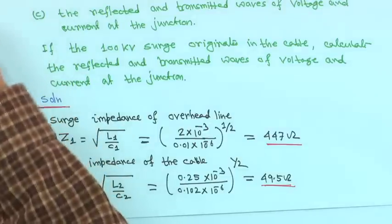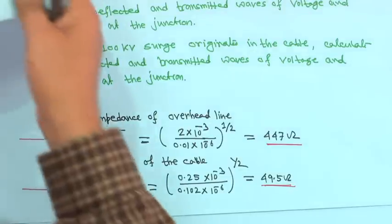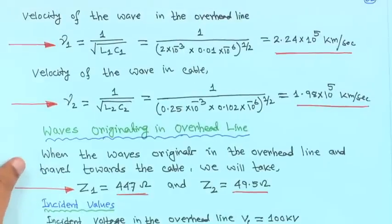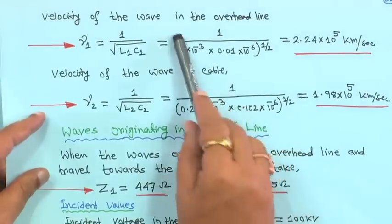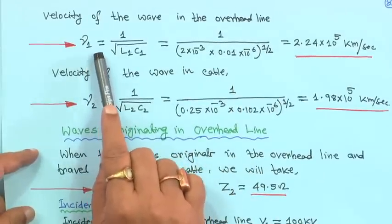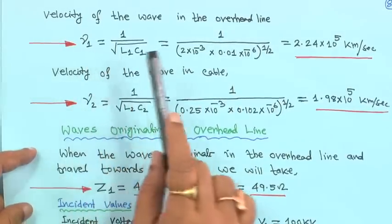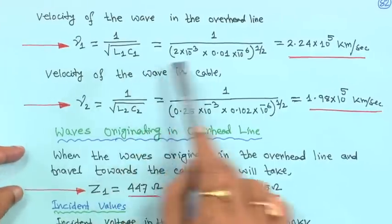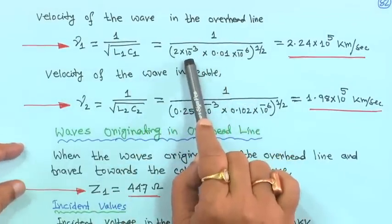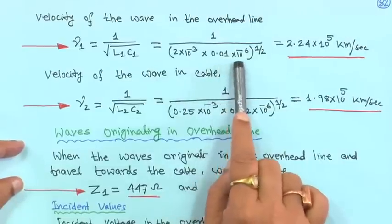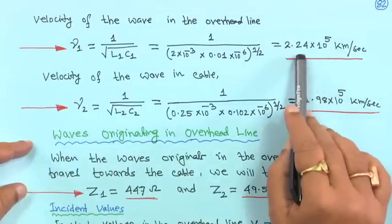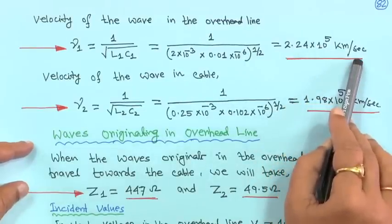So we have computed the surge impedance of the cable as well as the overhead line. Next, the velocity of the wave in the overhead line, call it gamma1, equals 1 upon root over L1·C1. With L1 equal to 2×10⁻³ and C1 equal to 0.01×10⁻⁶, the result is 2.24×10⁵ kilometers per second.